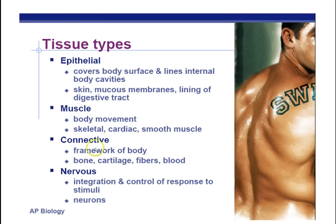Connective tissue connects things together. Bone, cartilage, and other fibers are fairly straightforward examples. However, blood is also a type of connective tissue — the reason we consider it connective is that it connects the lungs to your toes via the blood that carries oxygen, glucose, and other things around your body.